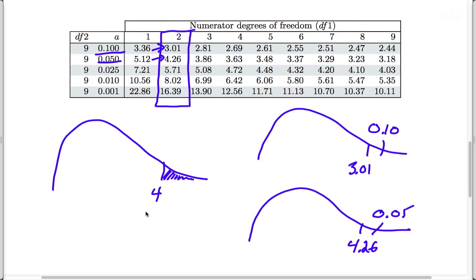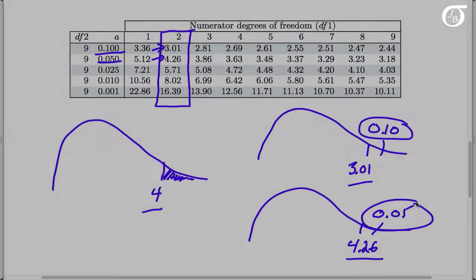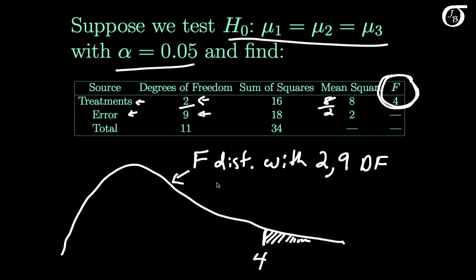And since 4 lies between 3.01 and 4.26, this area must lie between these two numbers. And so using a table we found that the p-value, which is simply the area to the right of 4 under this curve, is less than 0.10 but greater than 0.05.